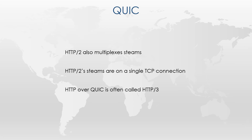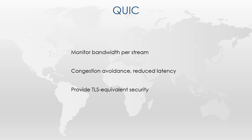Other benefits that multiplexing brings is the ability to monitor each stream. This then enables the protocol to prioritize some streams over others, which reduces latency and helps avoid congestion. Additionally, QUIC uses encryption to provide TLS equivalent security.